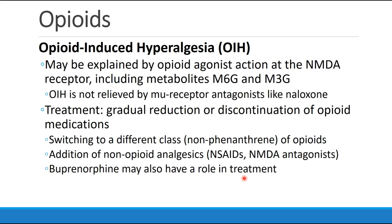Why does this occur? There may be some opioid agonist action at the NMDA receptor — not only from the parent agonist, but its metabolites like morphine-6 and morphine-3 glucuronide. This is supported by the fact that opioid-induced hyperalgesia is not relieved when you give a mu receptor antagonist like naloxone. The best treatment is to gradually reduce or completely discontinue the opioid medications. You may be able to switch the patient to a different class of opioids — some non-phenanthrene opioids. Addition of other non-opioid analgesics may be helpful, like NSAIDs or NMDA antagonists. And buprenorphine may also have a role in treatment of opioid-induced hyperalgesia.